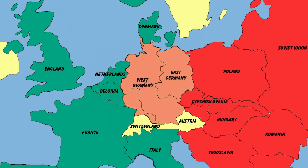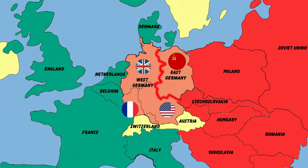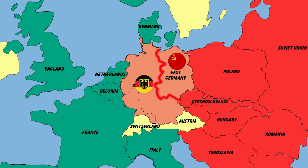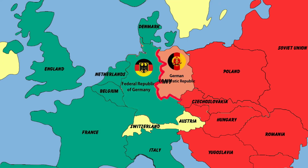Germany alone was divided into four occupation zones. West Germany was occupied by British, French, and American troops, and East Germany was assigned Soviet troops. The capital was divided by the Berlin Wall. In July 1948, the United States, Great Britain, and France united the three occupation zones to establish the Federal Republic of Germany following the capitalist path. In the east, the Soviet Union established the German Democratic Republic following the socialist path, becoming a satellite state of the Soviet Union.